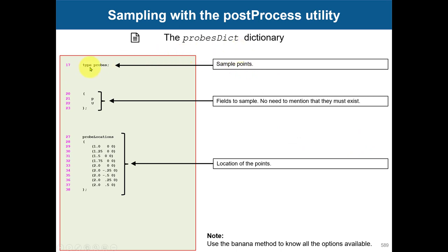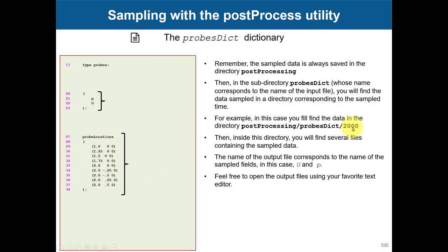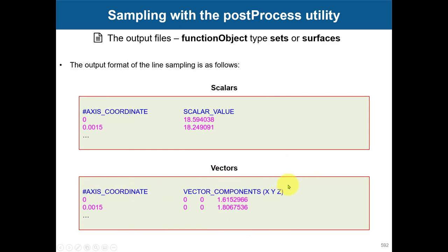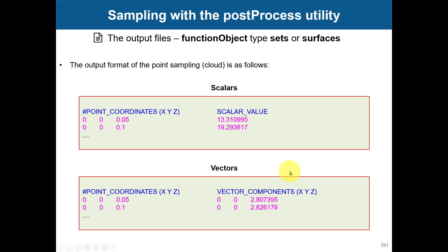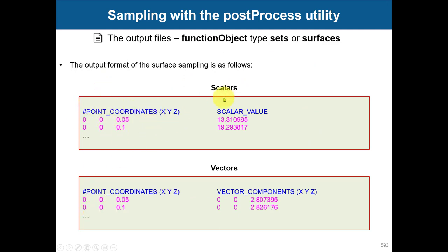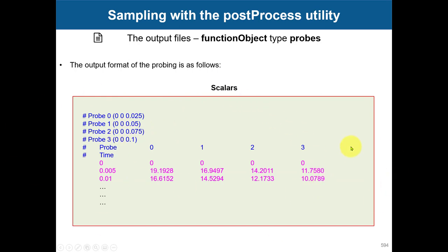For probes, the setup is similar: type 'probes', specify the fields, then give the locations as x, y, z coordinates. All the information is saved in the same postProcessing directory. The output file format for scalars and vectors always includes x, y, z coordinates and x, y, z components of the vector. You can also have tensor output with all tensor components. For line sampling you get the axis coordinate or distance depending on the mode — there are different modes you can choose.